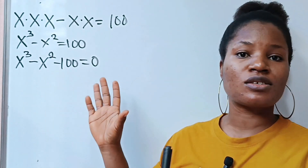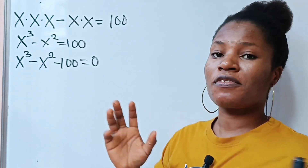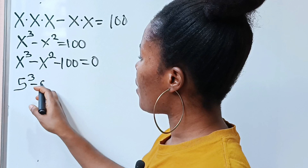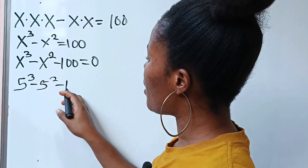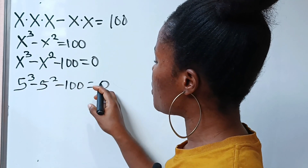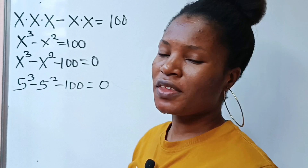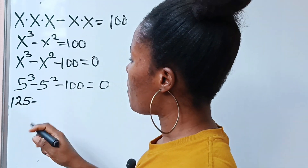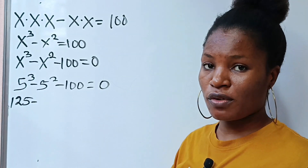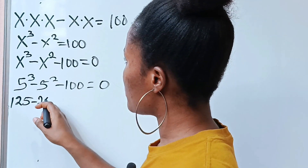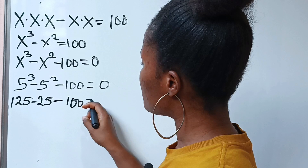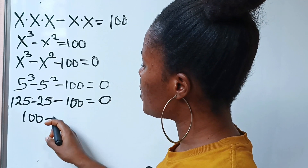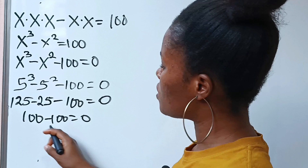The first value of x that is so noticeable is 5, because if we say 5 to the power of 3 minus 5 squared minus 100 is equal to 0: 5 to the power of 3 gives us 125, minus 5 squared gives us 25, so 125 minus 25 gives us 100, minus 100 is equal to 0. This is true, so we can say that x is equal to 5.